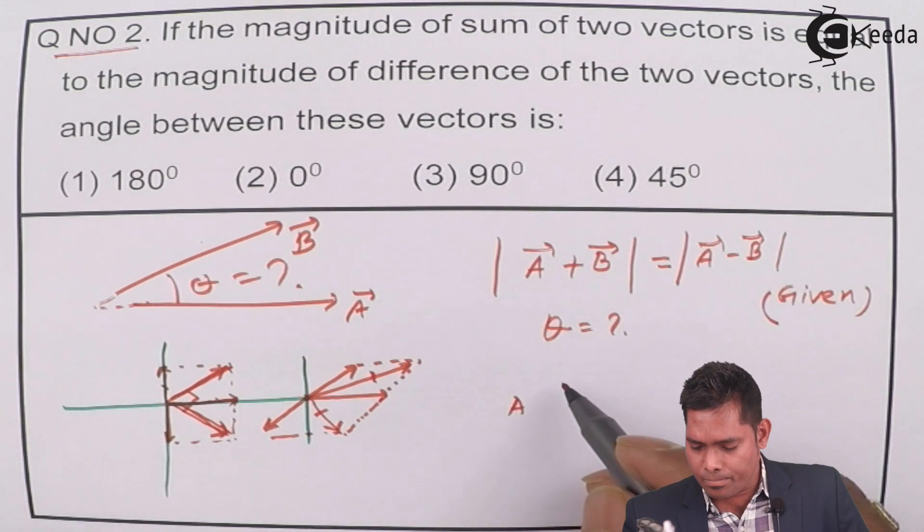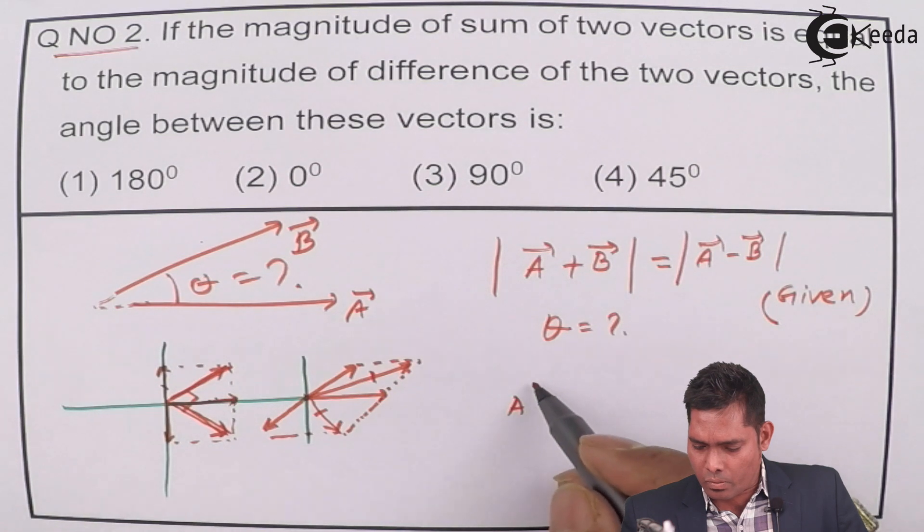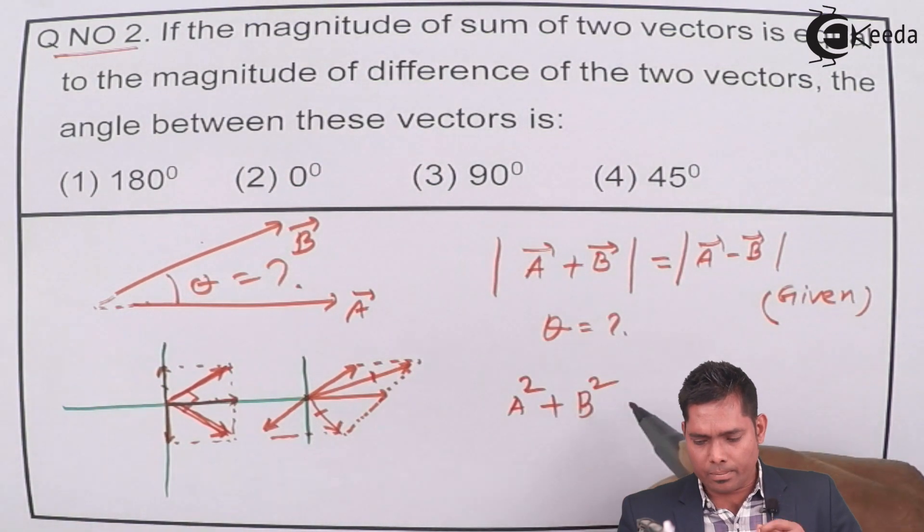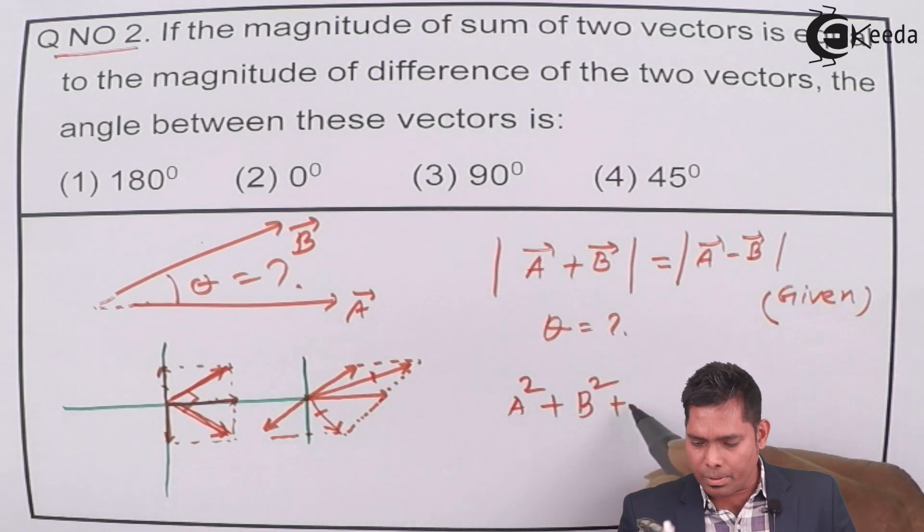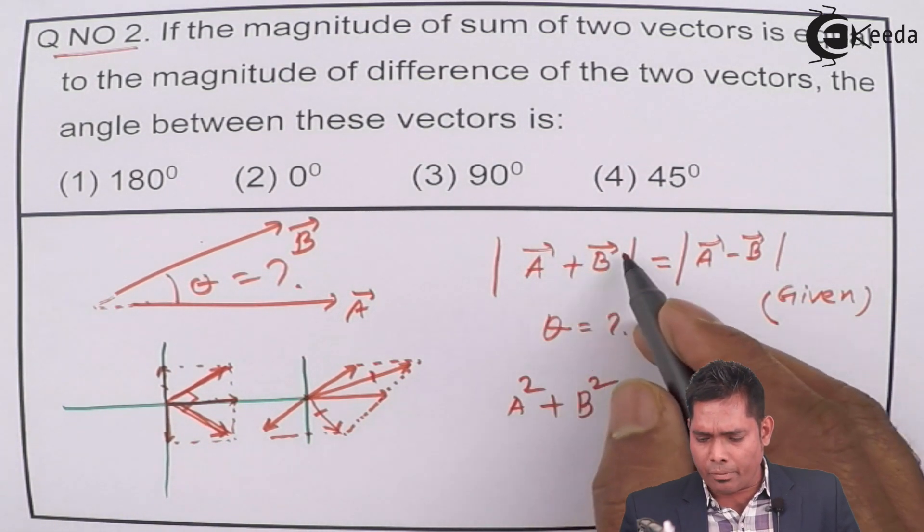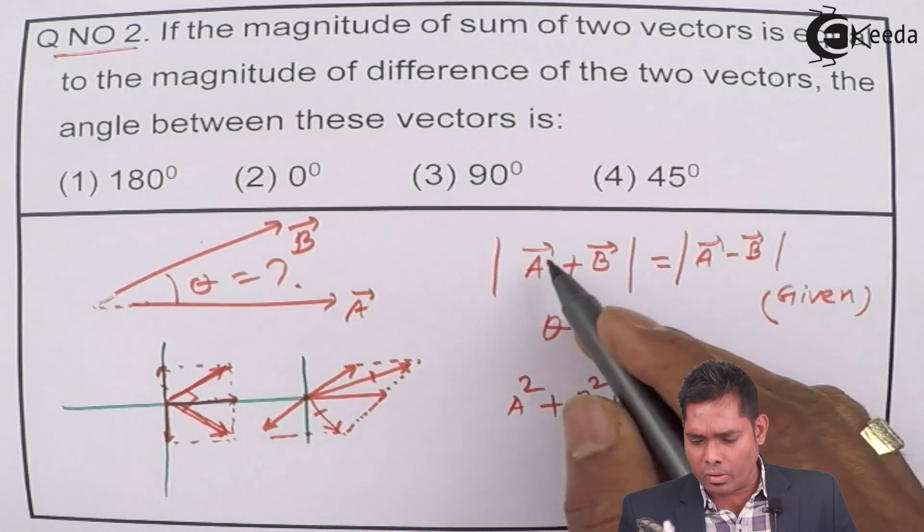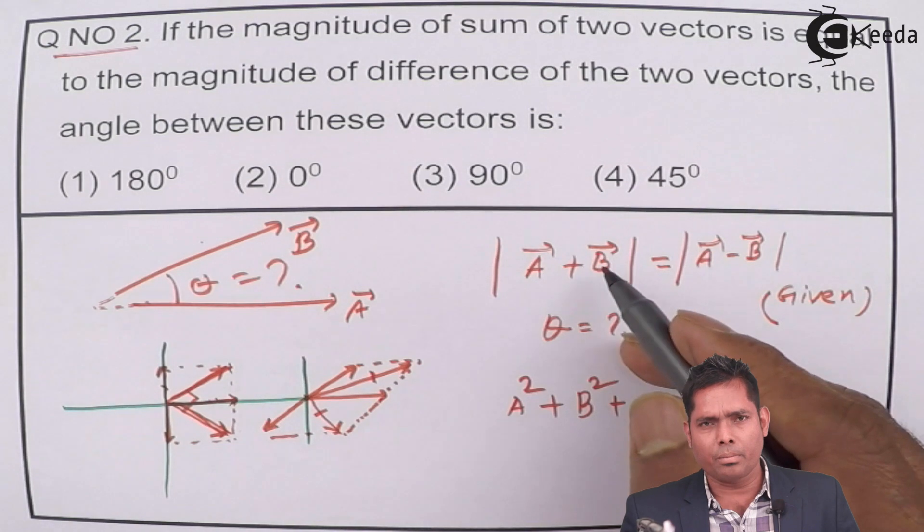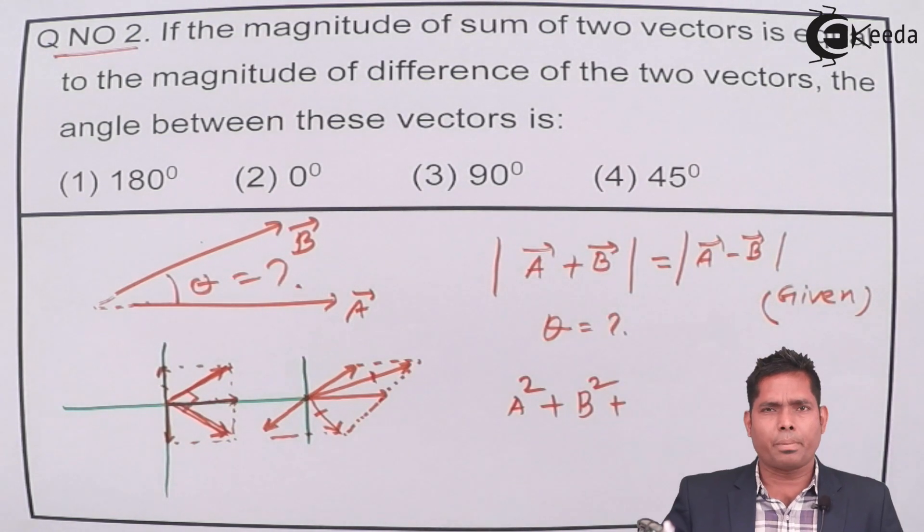the square of this is A² plus B², then plus, because this is the, if I consider this as R, R₁ or R₂, magnitude of R₁, but what is the square of that magnitude?